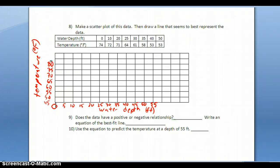Now I'm going to plot my data points. I have a water depth of 0 and temperature of 74, so that's just below 75 here. Then 10 and 72, 20 and 71, 25 and 64.